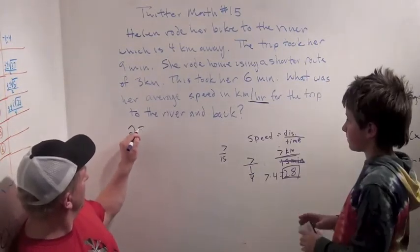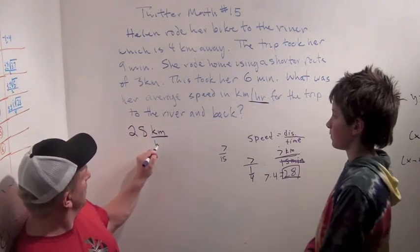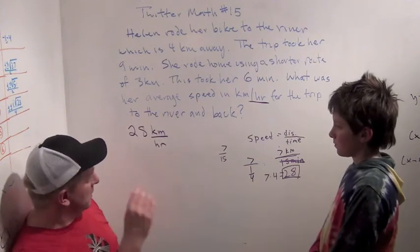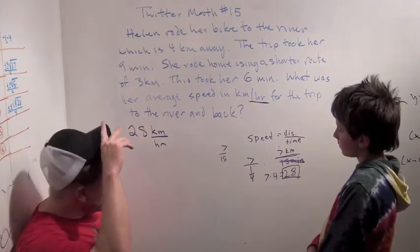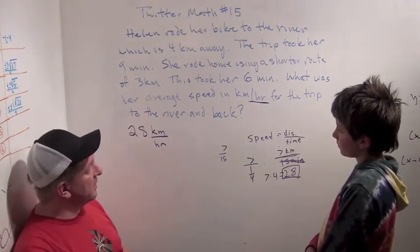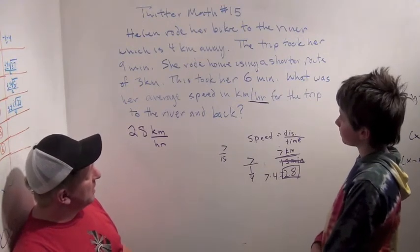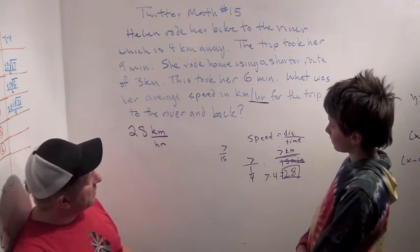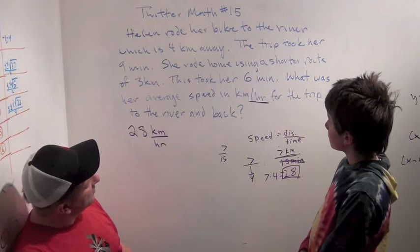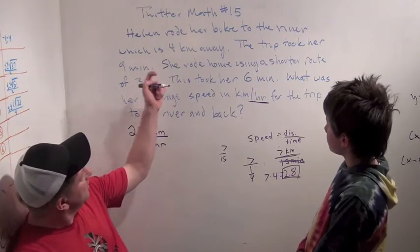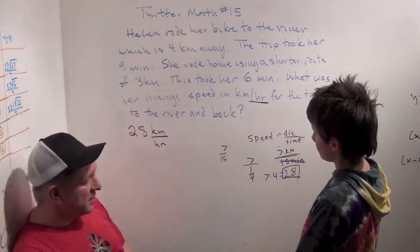So you think the answer is 28 kilometers per hour. How can we check it? That's actually a good question to ask at the end of any problem. Maybe let's figure out what her average speed was for the first part of the trip — she went 4 kilometers in 9 minutes.